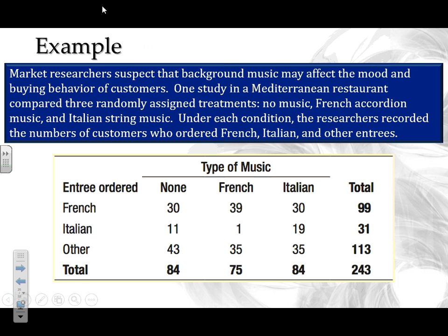Here's our example: market researchers suspect that background music may affect the mood and buying behavior of customers. One study in a Mediterranean restaurant compared three randomly assigned treatments: no music, French accordion music, and Italian string music. Under each condition, the researchers recorded the number of customers who ordered French, Italian, and other entrees.